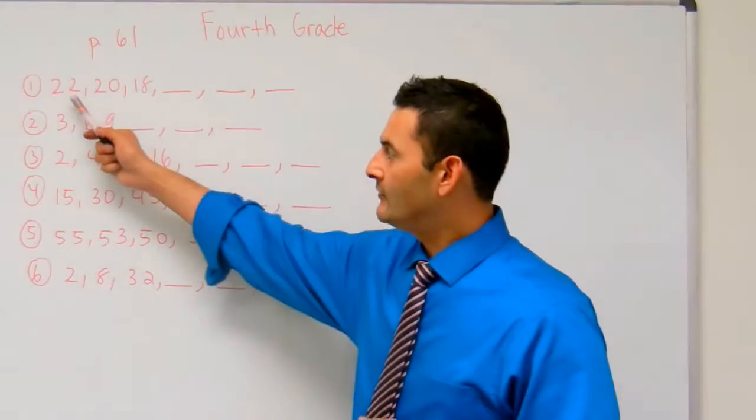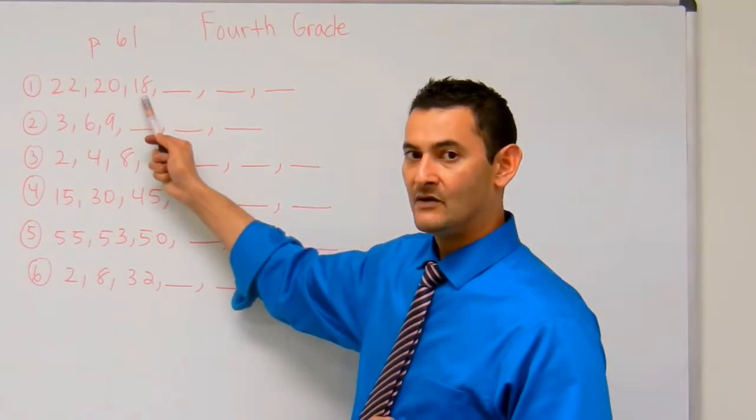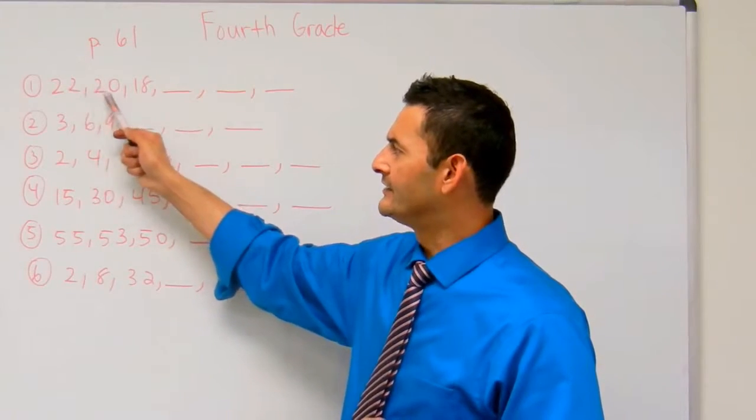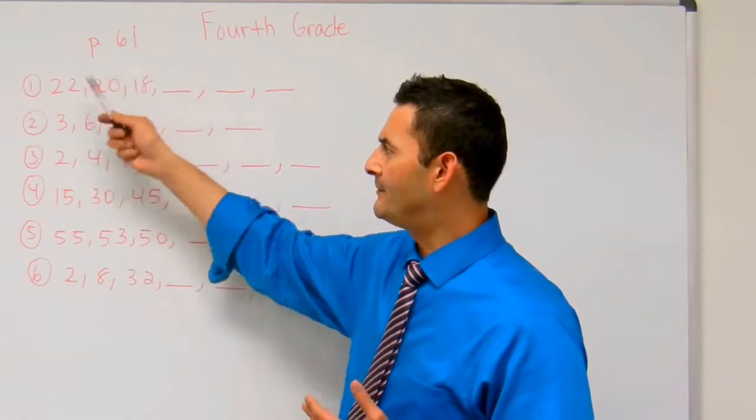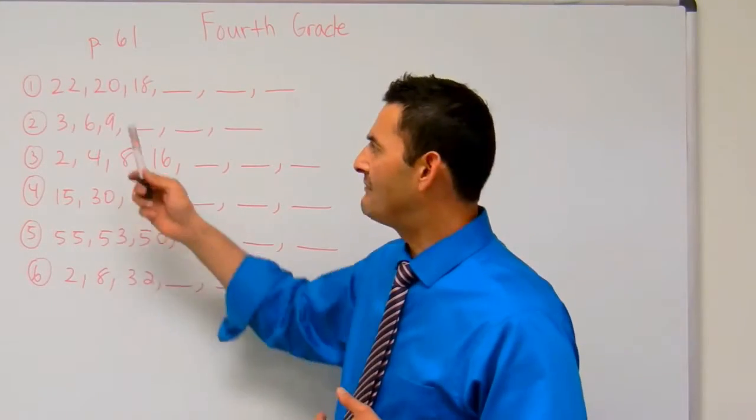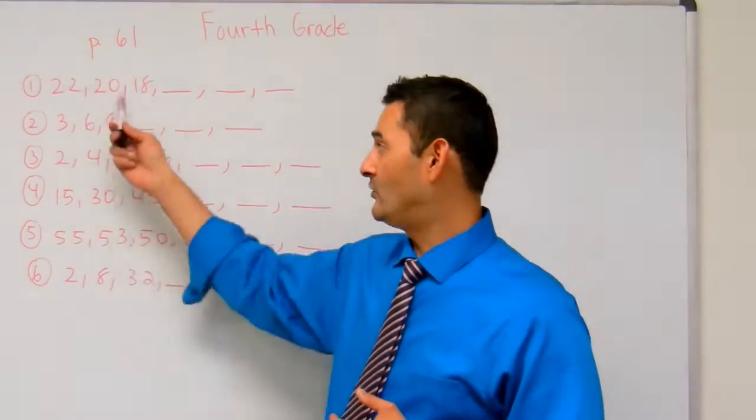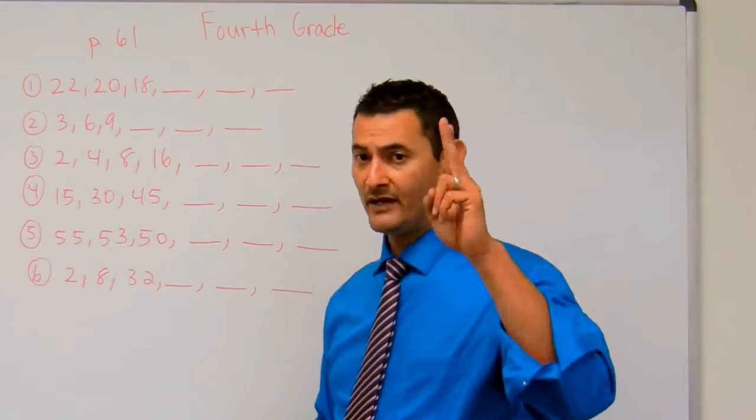Number 1, here we have 22, then it became 20, then it became 18. What do you think the pattern is here? First of all, I'm not going up, I'm going down, I'm taking away. So 22, how did I get to 20? I subtracted 2.